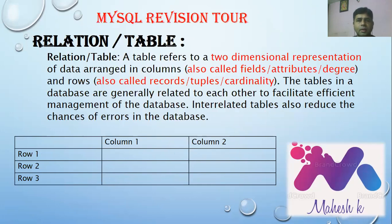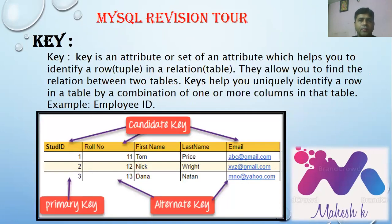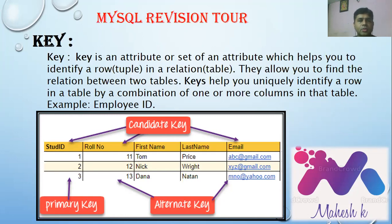A key is an attribute or set of attributes that helps you identify rows and tuples in a relation table. Keys allow you to find the relation between two tables and uniquely identify rows by a combination of one or more columns. For example, in a student record, columns like Student ID, Roll Number, and Email ID can act as unique identifiers.